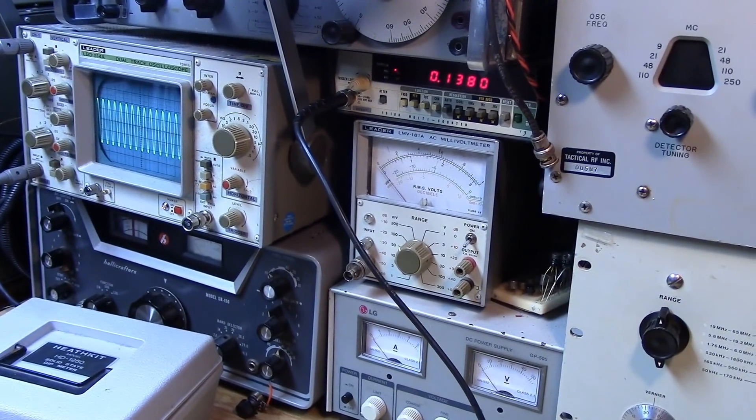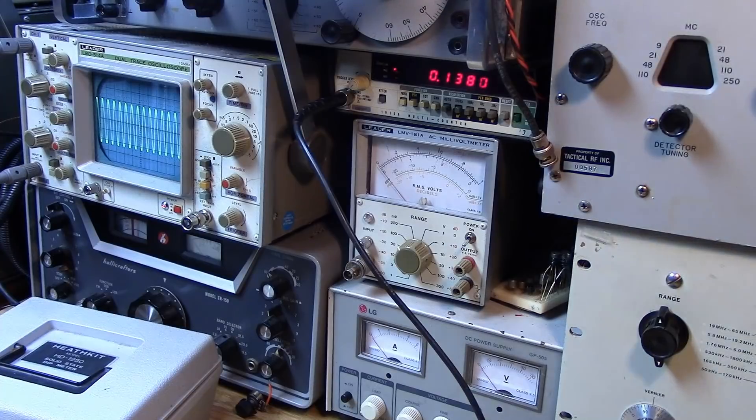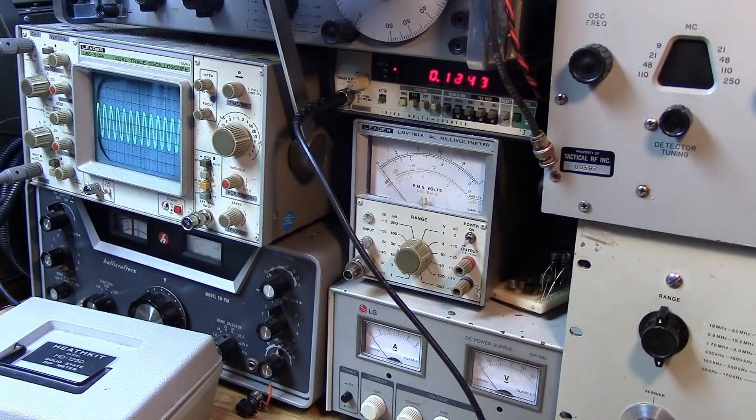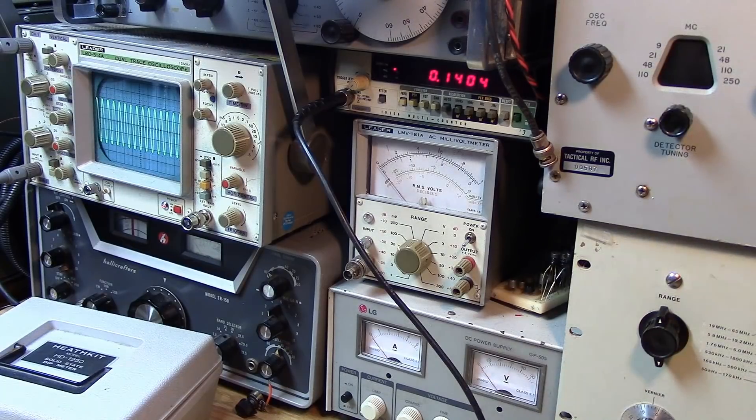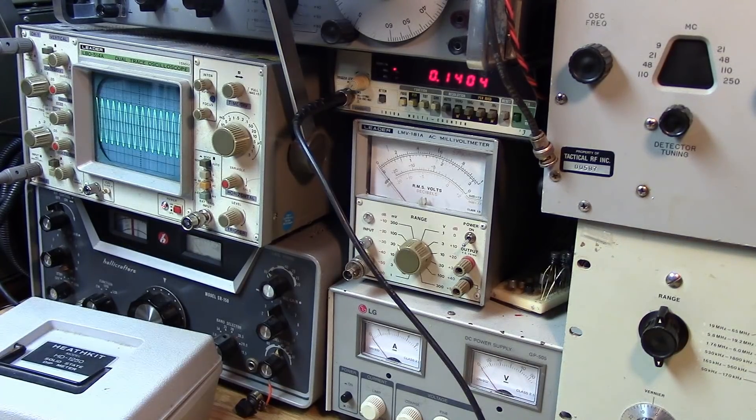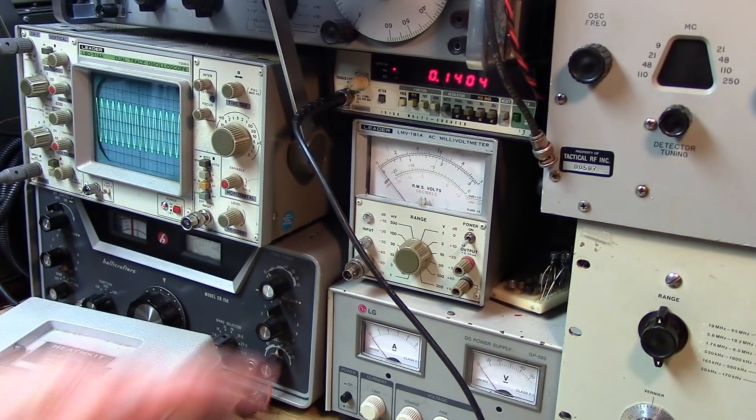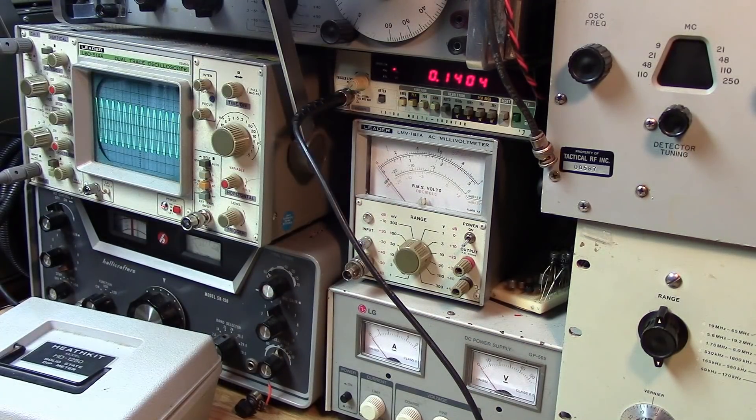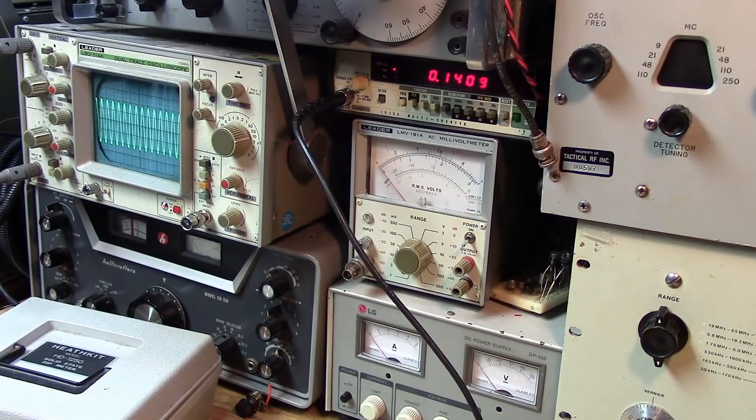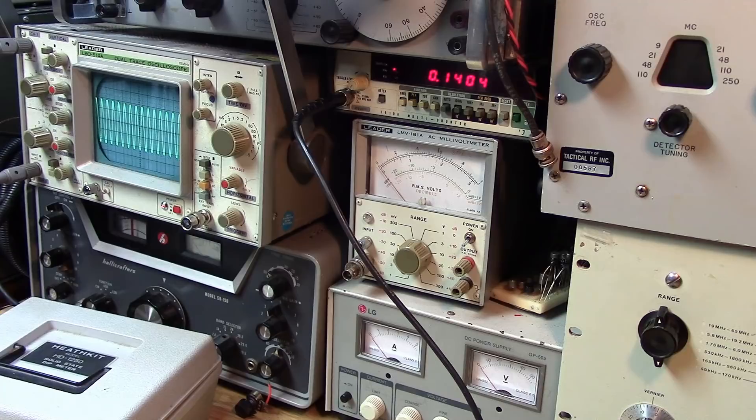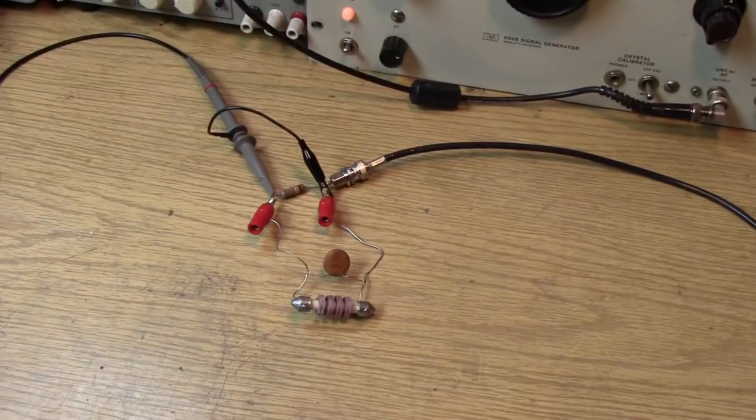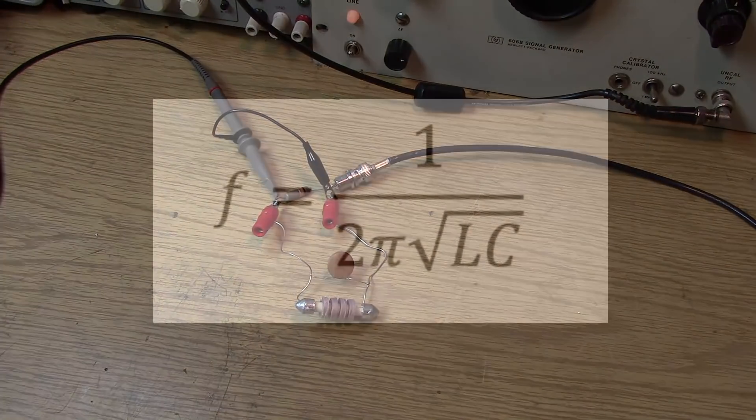Now, I can use either my RMS voltmeter to look for a peak, or I can use my scope. So as I wiggle the frequency around, we will see there is a peak, and that peak is coinciding with the frequency here of 140 kilohertz.